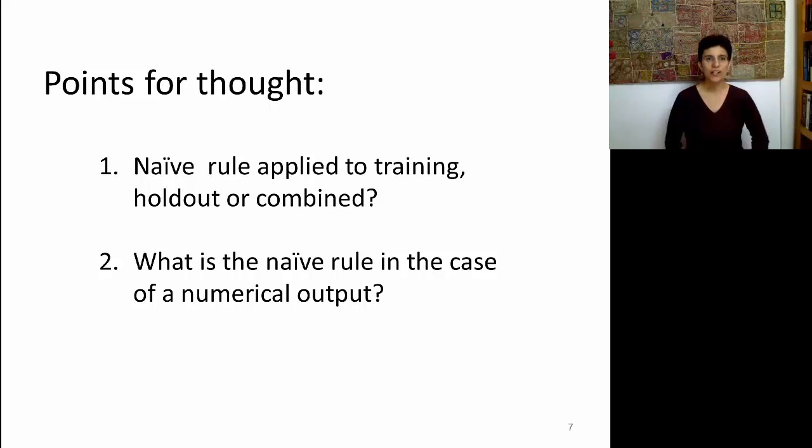The second point we want to consider is a numerical output. There's also a Naive rule in the case of a numerical Y. We just talked about a classification case with a categorical Y, but think about linear regression. If I don't give you any information about the predictors, what would be your best guess for the Y, based only on information that you have on Y measurements? Think about it.